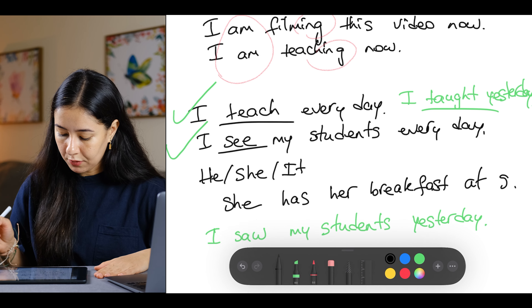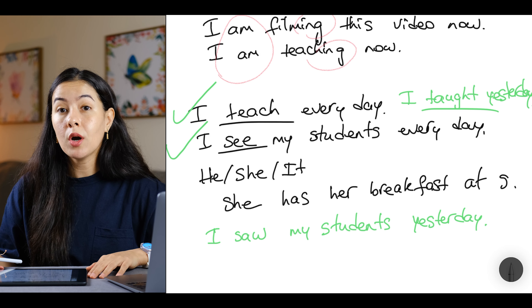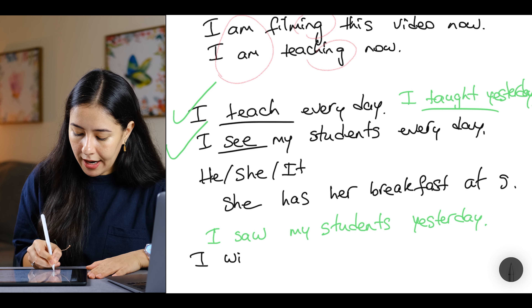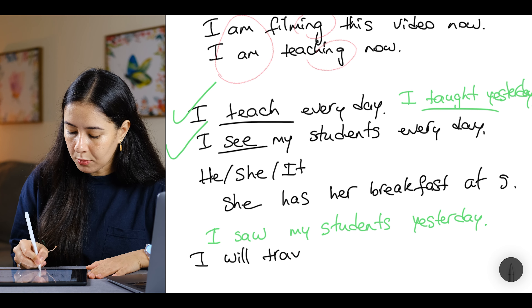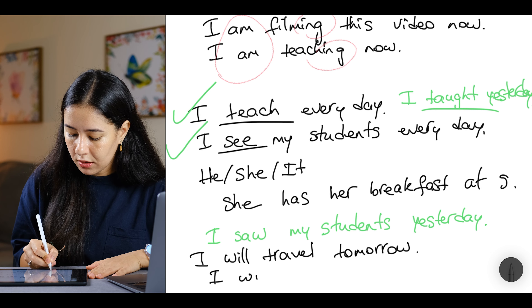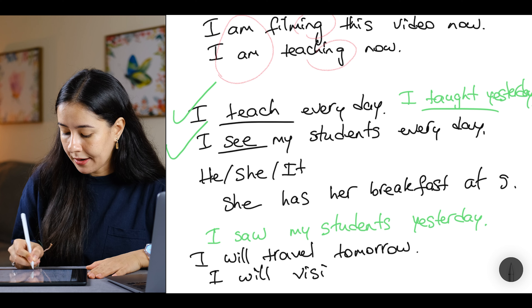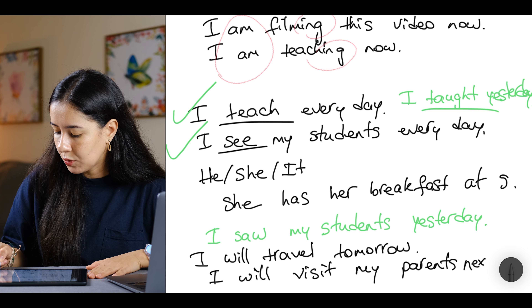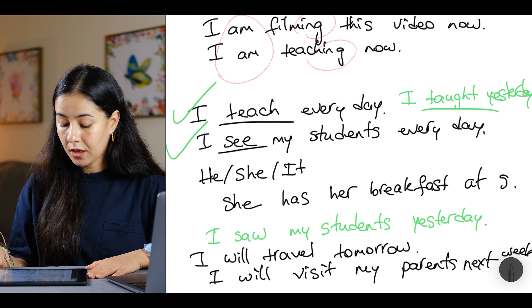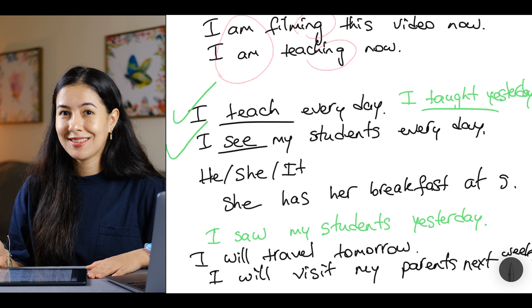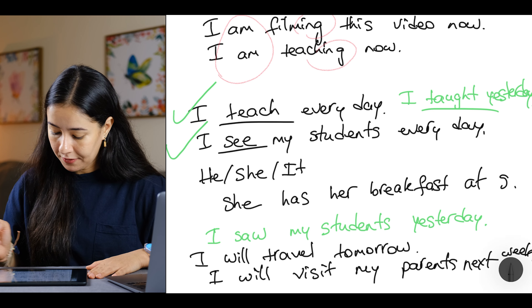Let me show you one example for the future as well — it's very simple, with 'will'. I will travel tomorrow. I will visit my parents tomorrow. I won't visit my parents tomorrow — I will visit them next week. Well done!